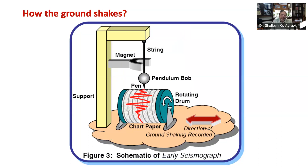As you know, earthquakes can come from all directions. Therefore, a seismograph is required for each of the two orthogonal horizontal directions, which we call x and y, and one for the vertical direction, that is z direction. The earlier seismographs were analog instruments, which evolved over time. Today we have digital instruments using modern computer technologies.